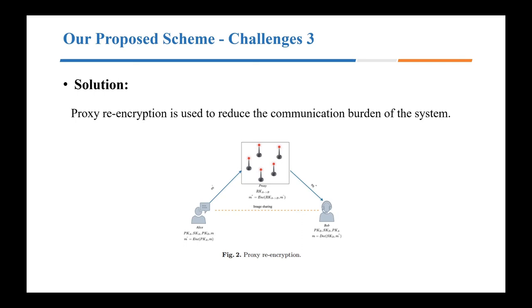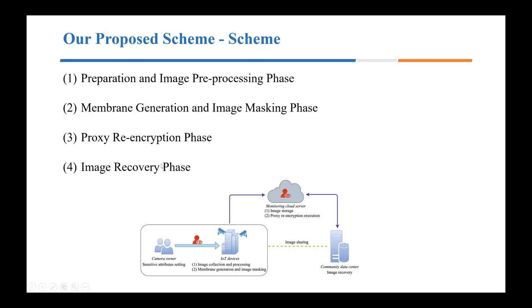The following image shows the process of proxy re-encryption. If Alice wants to share images with Bob, they can't share them directly but through the proxy. First, Alice uses her public key to encrypt the original image to get the encrypted image, and then uploads it to the proxy. To enable Bob to obtain the original image without interacting with Alice, the proxy re-encrypts the encrypted images. After Bob obtains the secondary encrypted image, he uses his own private key to decrypt it and get the original image. Our scheme is mainly divided into four major phases.